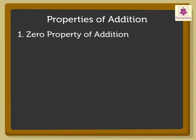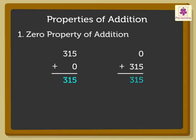Zero property of addition. Let us take the numbers 315 and 0. If we add 315 to 0, we get the sum 315. And even if we add 0 to 315, we get the sum 315. This tells us that the sum of 0 and any number is the number itself.